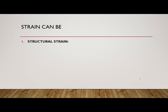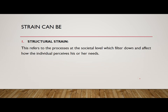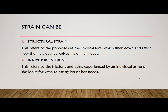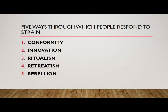There can be a structural strain — this refers to how the structure and hierarchy of society is created, which lets an individual know what his or her needs are. Strain can also be individual strain, meaning the pains experienced by an individual or how he or she looks for ways to satisfy their needs. This theory says that whenever an individual feels a strain, they cope with it in five different ways.